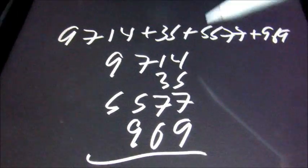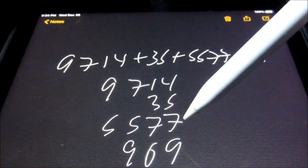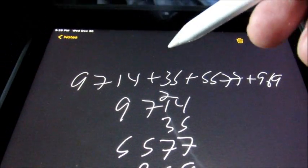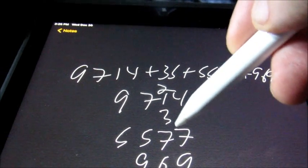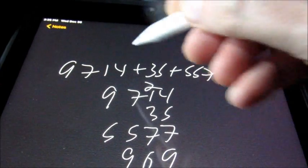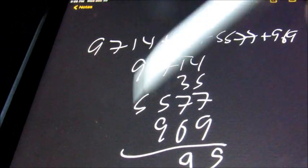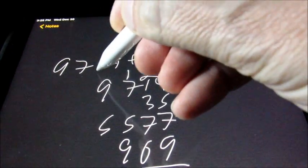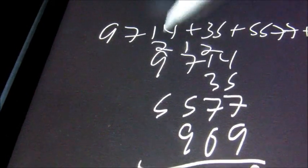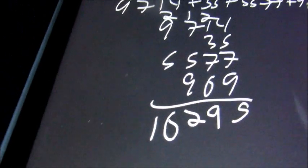Now we're going to add up all the ones column. We have 4 and 5 is 9, plus 7 is 16, plus 9 is 25. Carry the 2. 2 and 1 is 3, plus 3 is 6, plus 7 is 13, plus 6 is 19. Carry the 1. 1 and 7 is 8, plus 5 is 13, plus 9 is 22. Carry the 2. 2 and 9 is 11, plus 5 is 16. So our answer here would be 16,295.